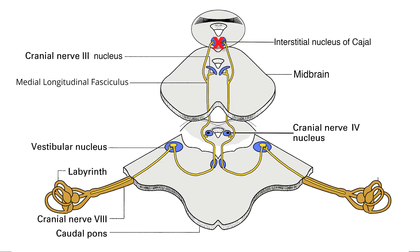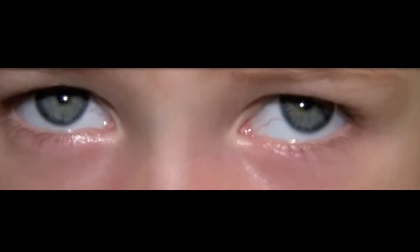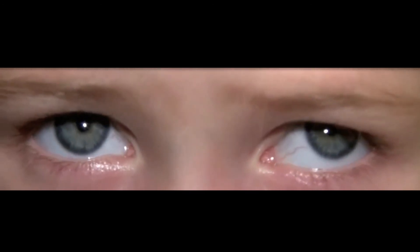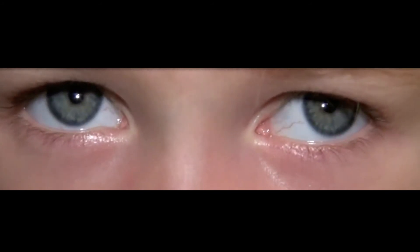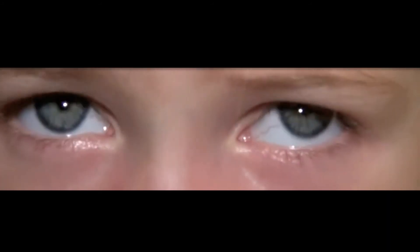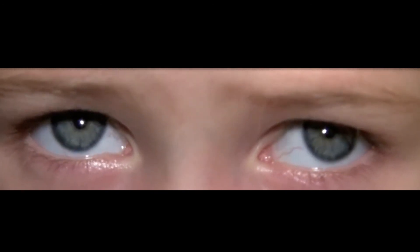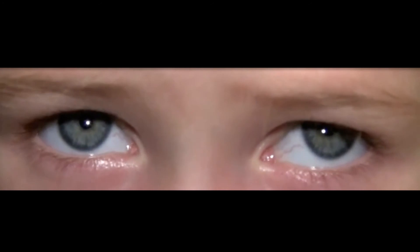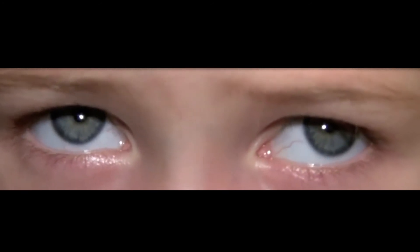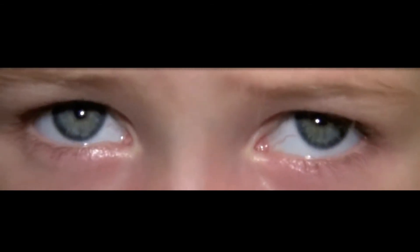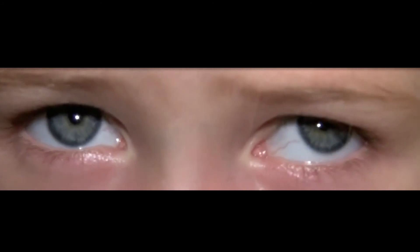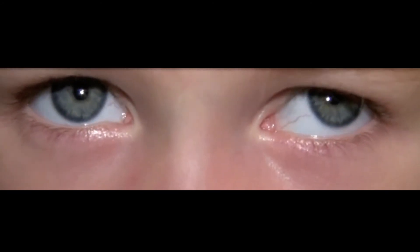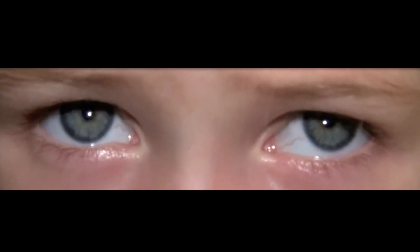A bilateral lesion in the region of the interstitial nucleus of Cajal may cause an oscillating type of skew deviation called seesaw nystagmus. In this condition, one eye is moving up while the other is moving down. Seesaw nystagmus is made up of two slow phases, so it is a form of pendular nystagmus. It is a sign of dysfunction of the diencephalon — the way station between the cerebral hemispheres and the brainstem. Because foveation time is reduced, patients will report blurred vision. If it begins after age five, patients will also report seeing objects oscillate, a symptom called oscillopsia.